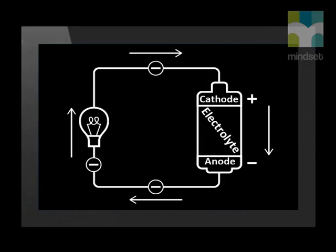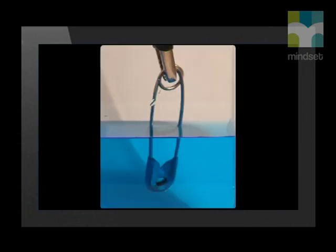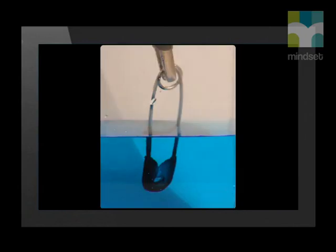We can see the link between electricity and chemistry, and we also remember all the terminology of redox reactions. In the examples of electrochemical reactions we saw that in batteries, a redox reaction takes place which causes a potential difference and a flow of current in a circuit. In another scenario, a potential difference causes a redox reaction to take place, such as in the electrolysis of copper sulfate.